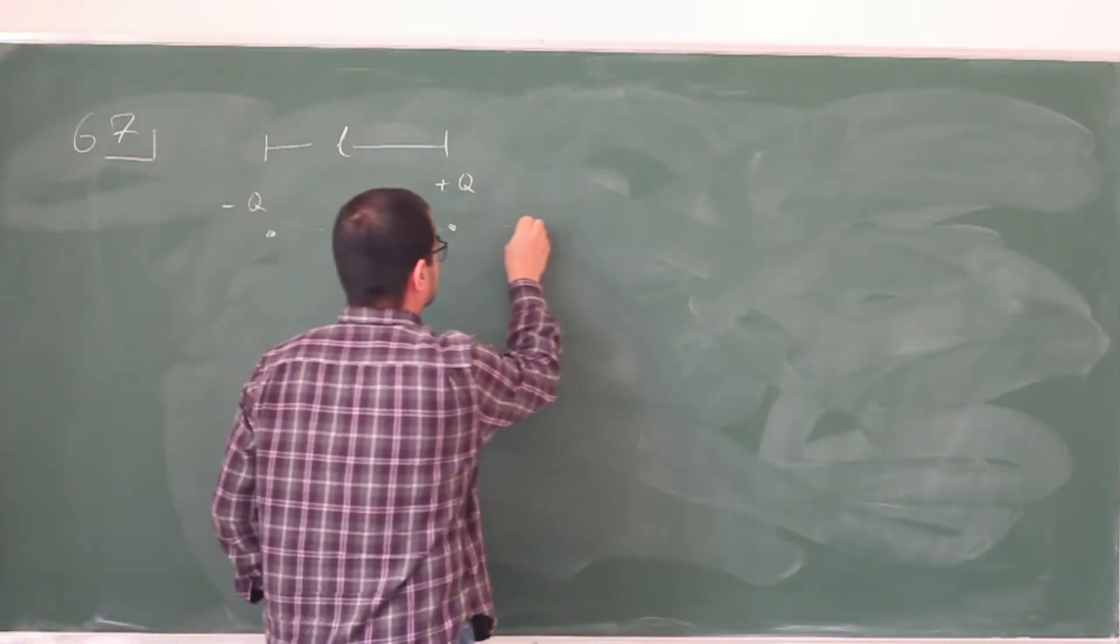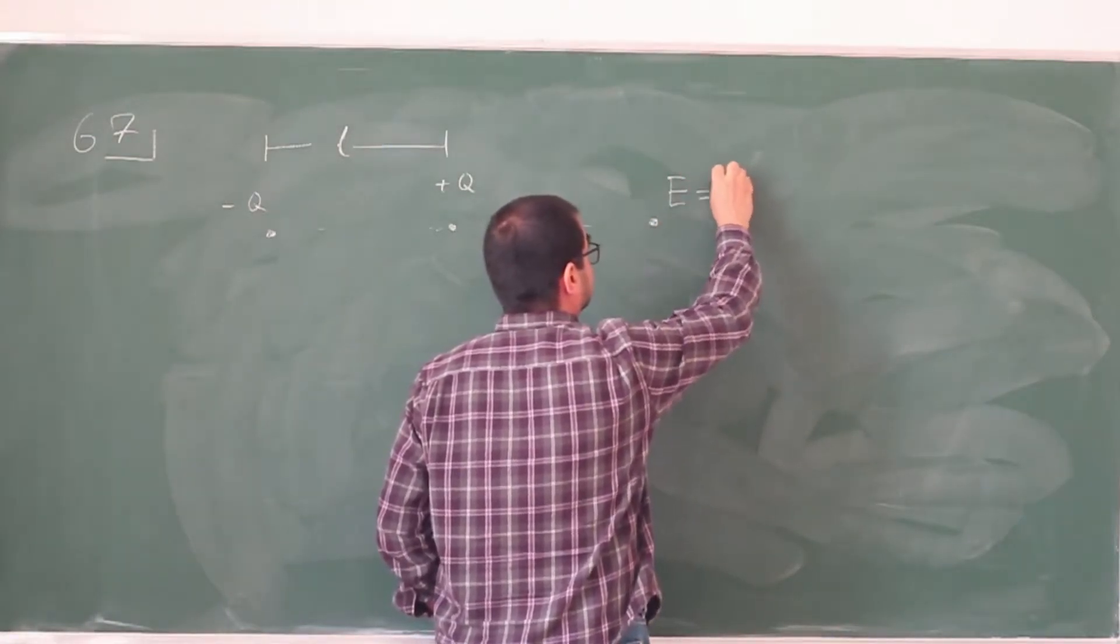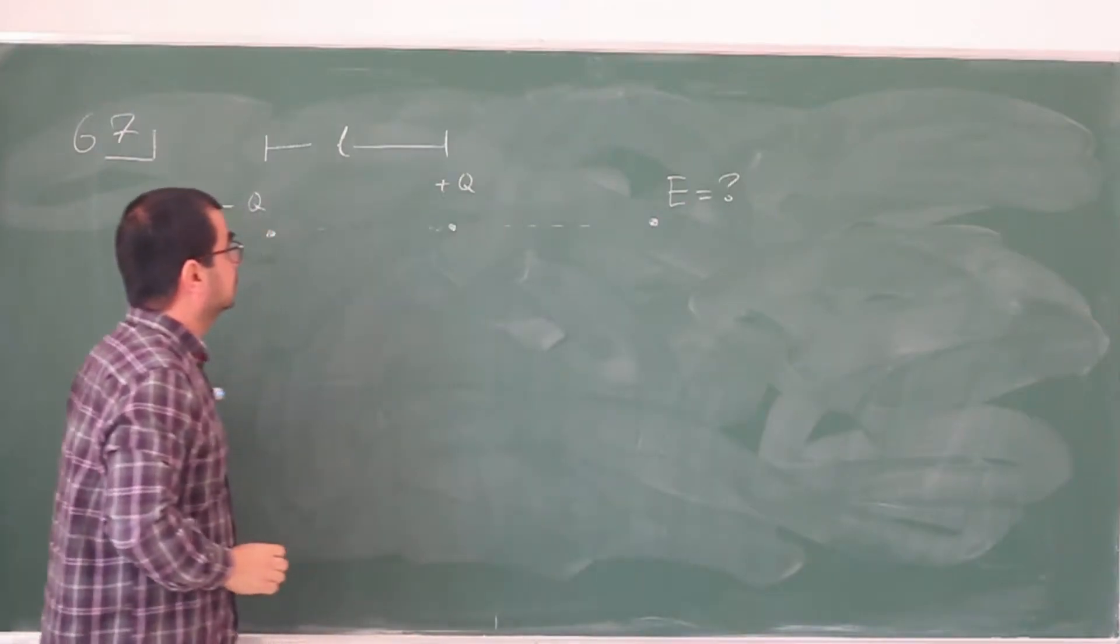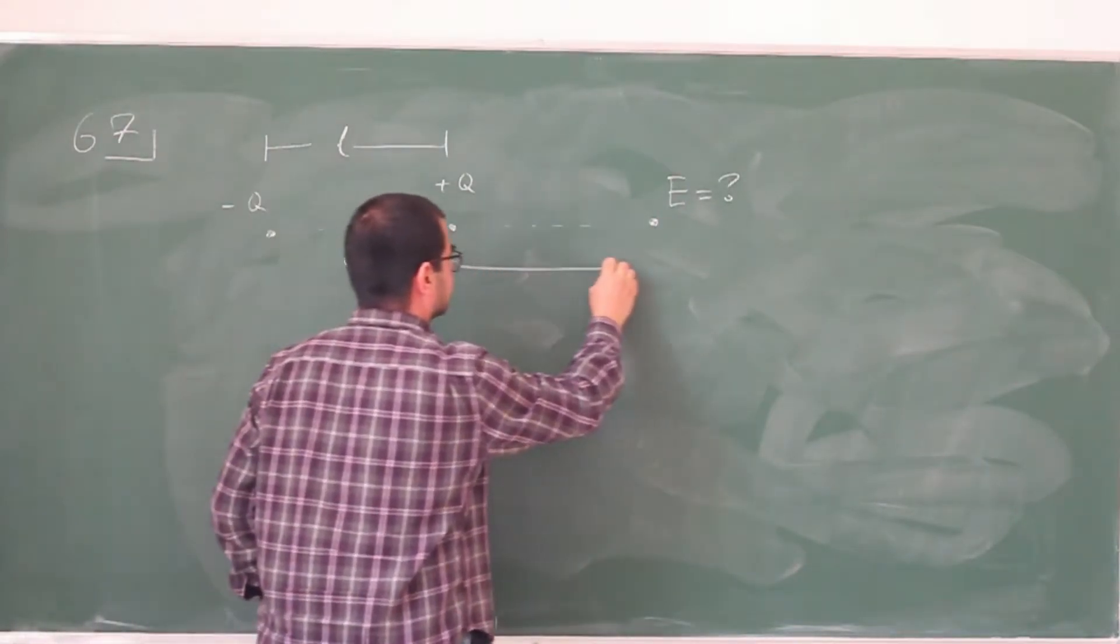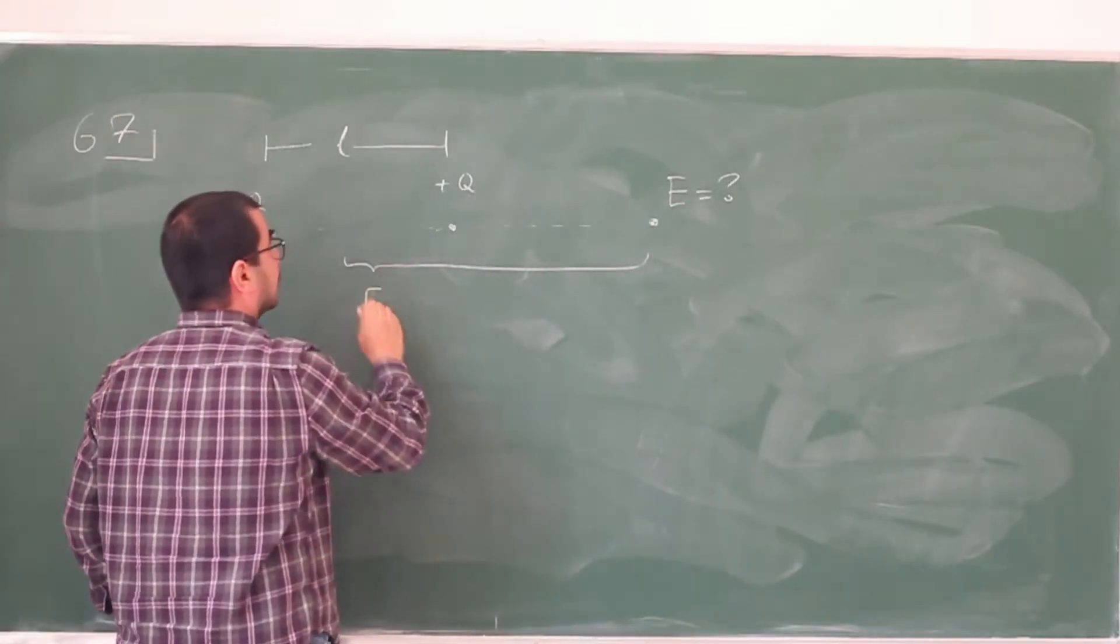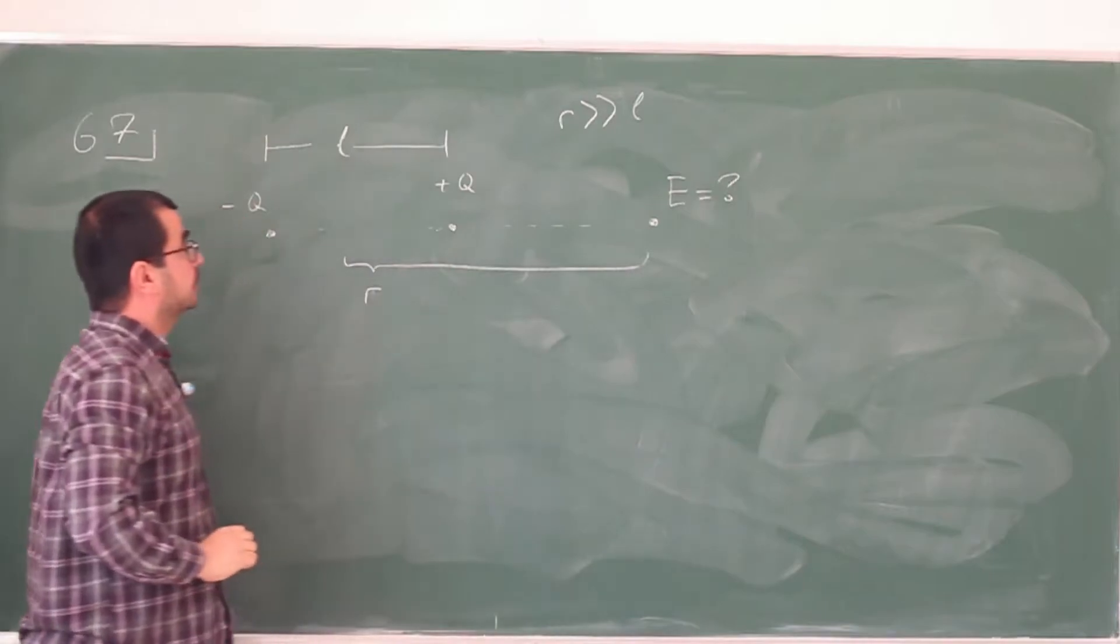So let's just extend this, and we are being asked the magnitude of the electric field at that point. And that point is separated at this distance R, and we are told that this R is much bigger than the dipole separation L.